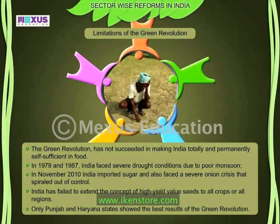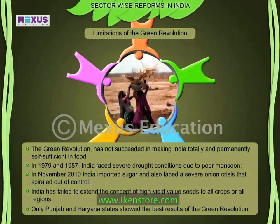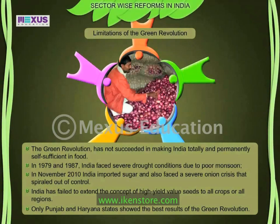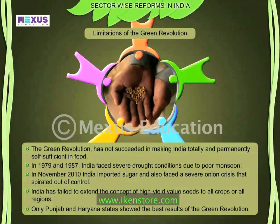The Green Revolution, however impressive, has not succeeded in making India totally and permanently self-sufficient in food. In 1979 and 1987, India faced severe drought conditions due to poor monsoons. India imported sugar, and in November 2010 there was unseasonal rainfall in some onion-producing regions, causing an abundant shortage and enormous rise in prices. India has failed to extend the concept of HYV seeds to all crops or all regions — it remained largely confined to food grains only, not to all kinds of agricultural produce.